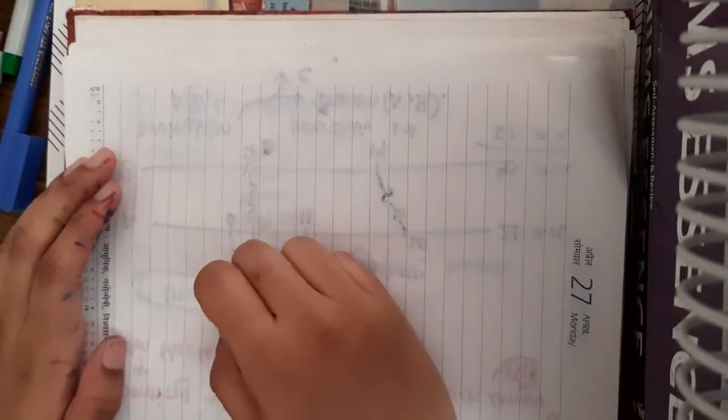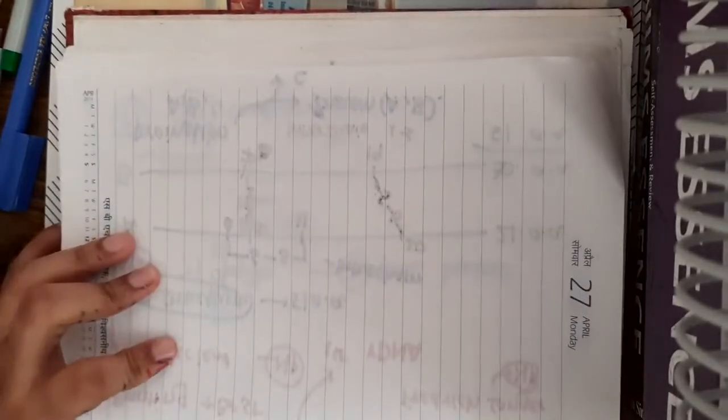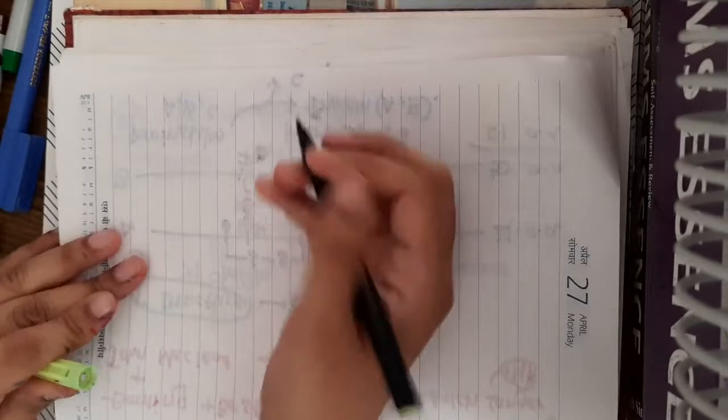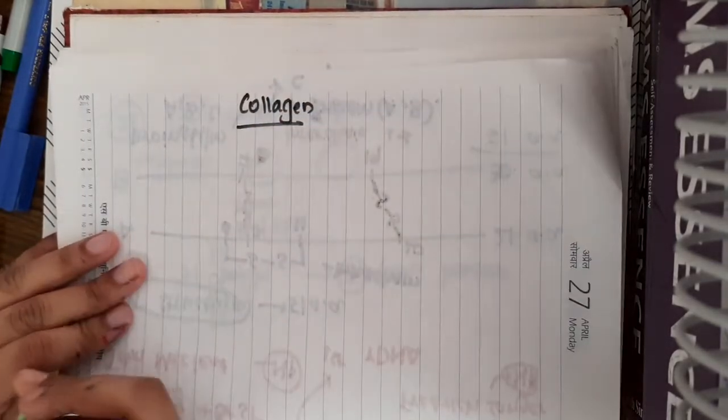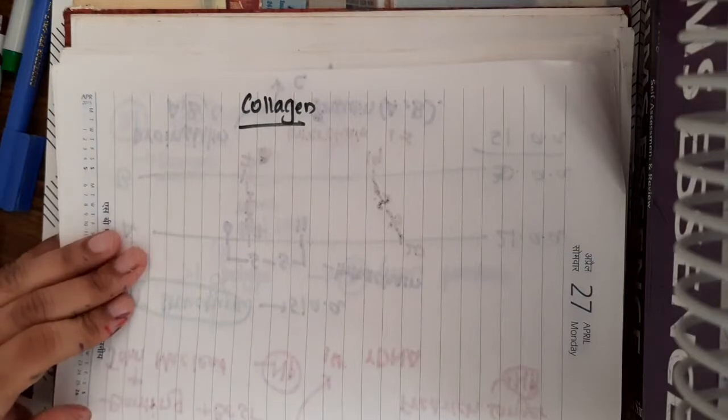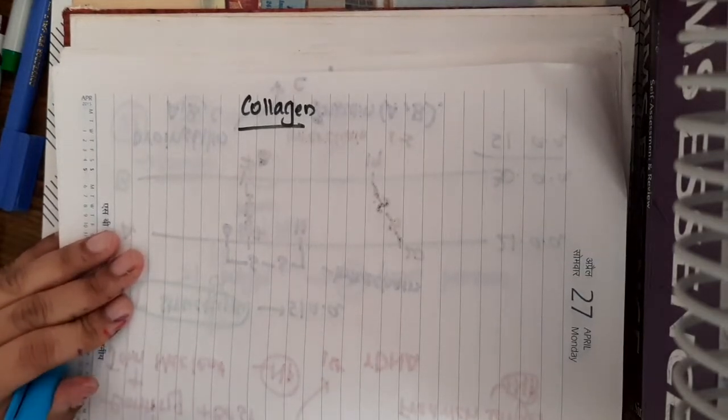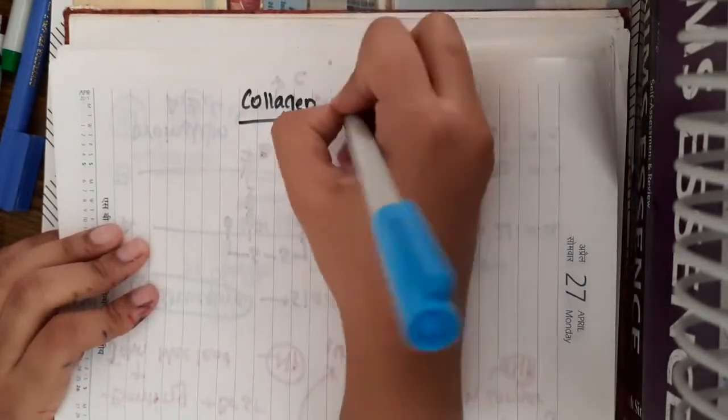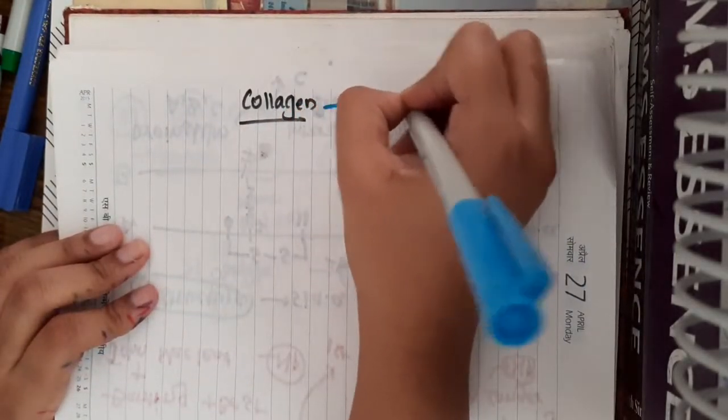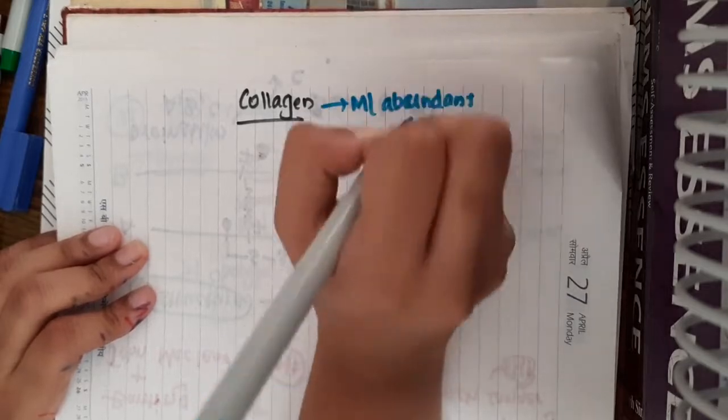Hello friends, let us now learn some important points about the protein collagen. This collagen is the major protein in extracellular matrix. It is also present in all the tissues of the body. So this collagen is the most abundant protein in the body.